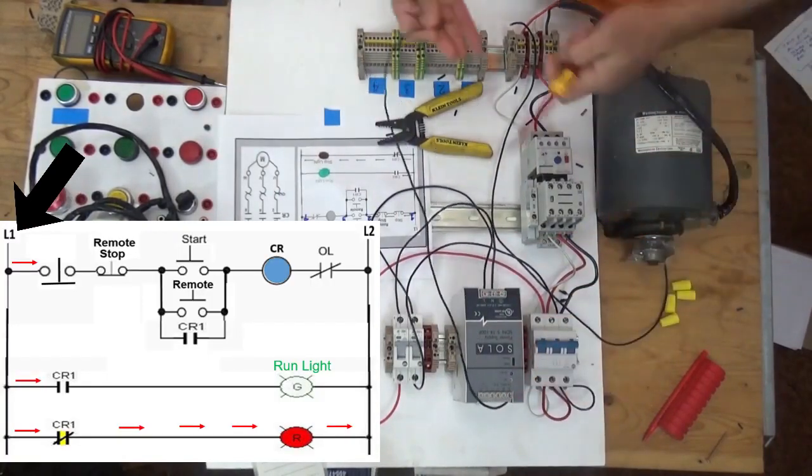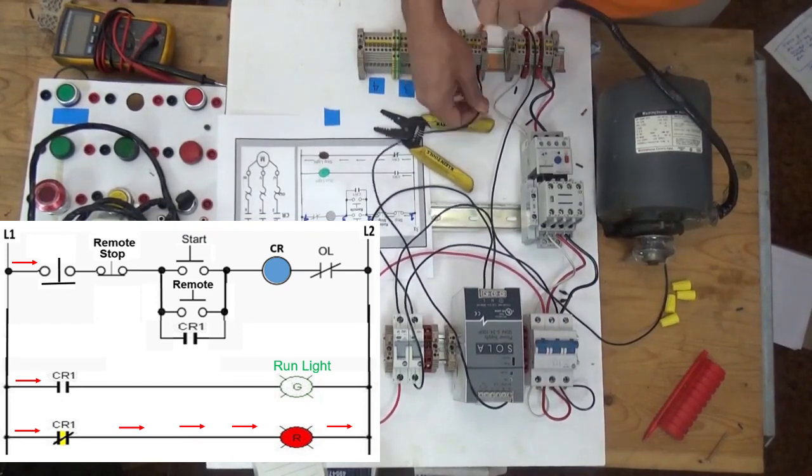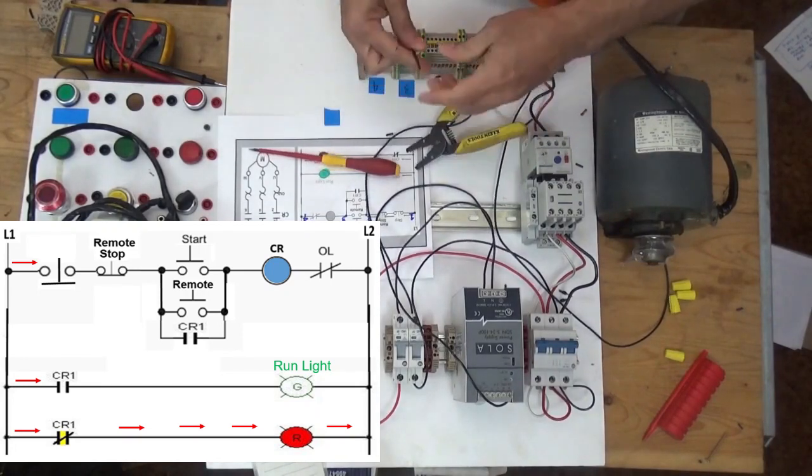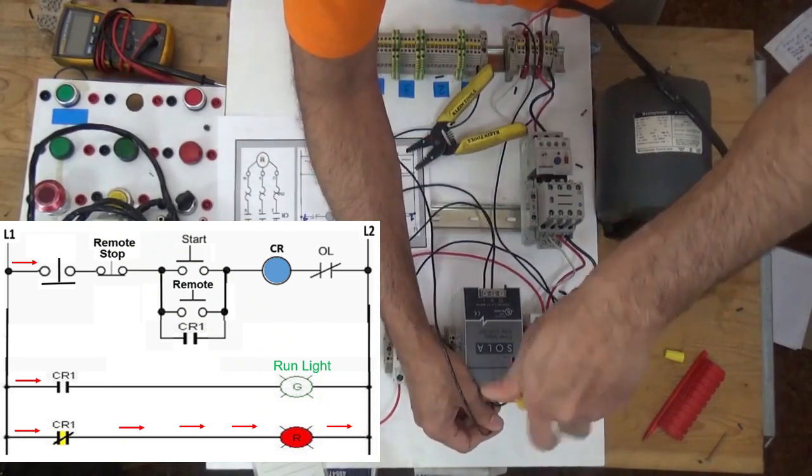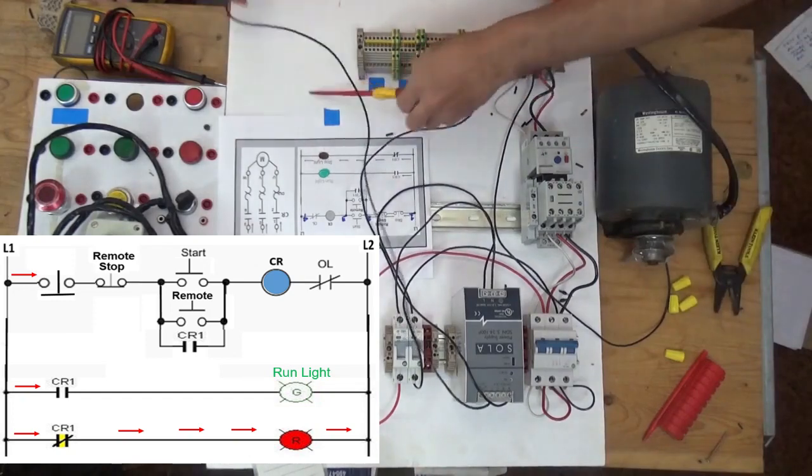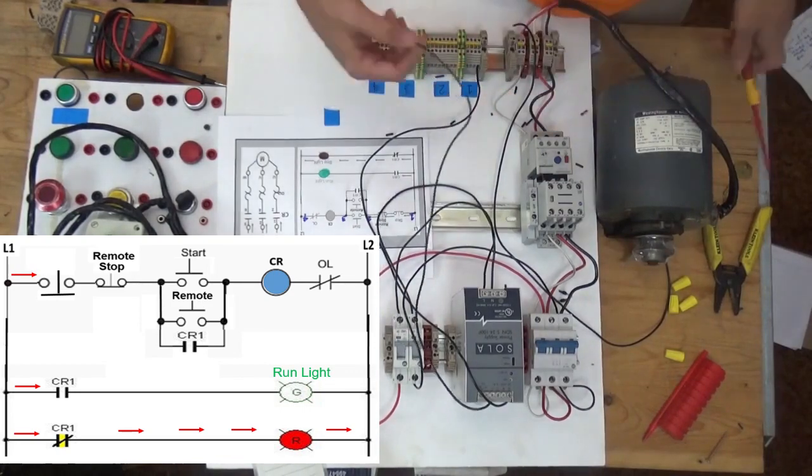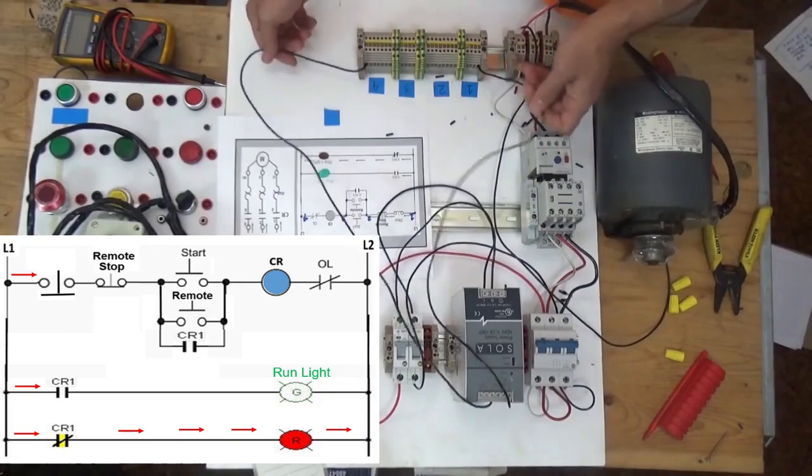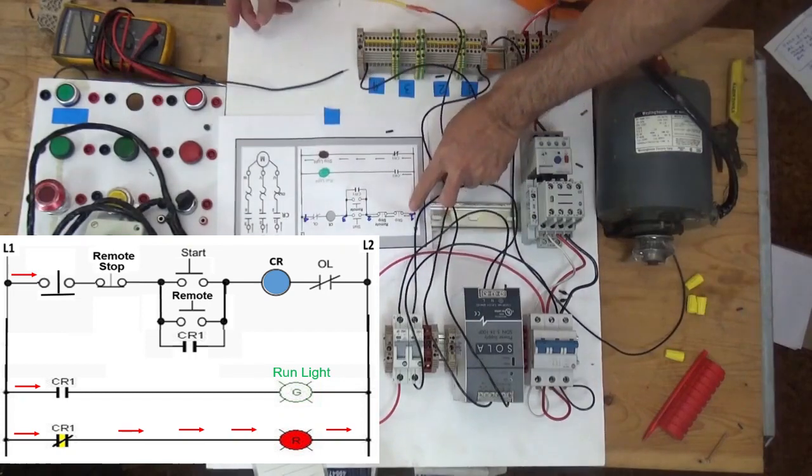From the positive terminal of our power supply going to line 1. For the negative supply for our 24 volts going to line 4.